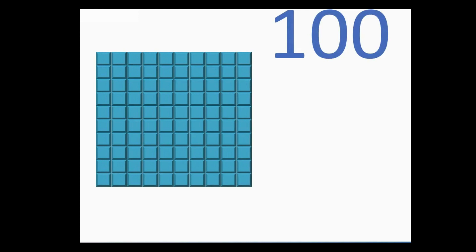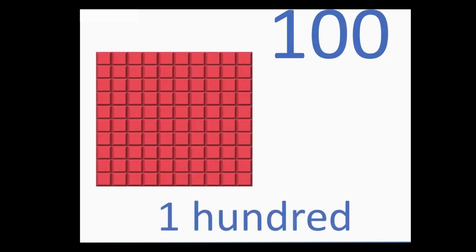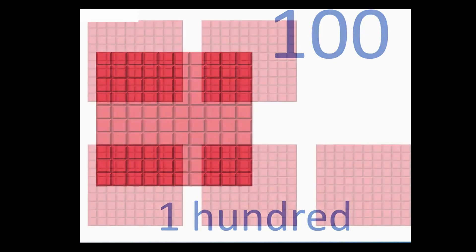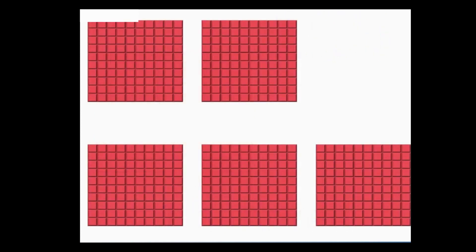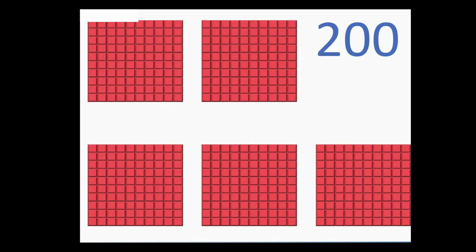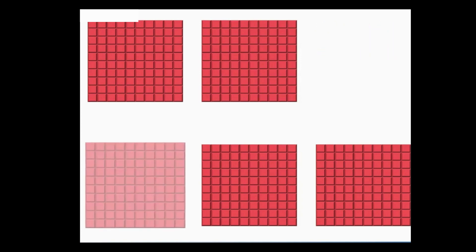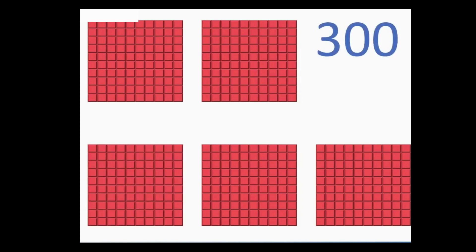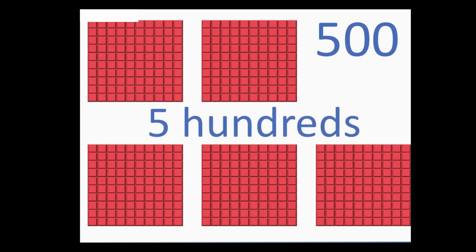Here we have one grid of 100, which is 100; two grids of 100, which is 200; three grids, which is 300; four grids, which is 400; similarly, five grids, which is 500.